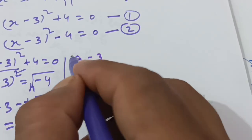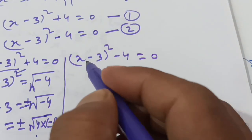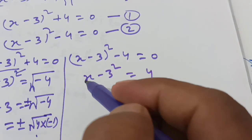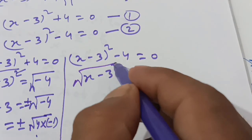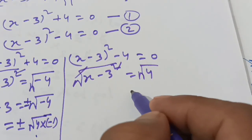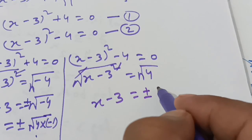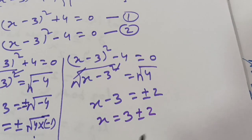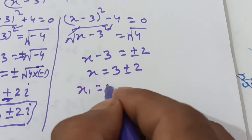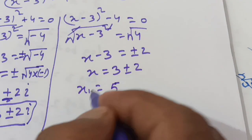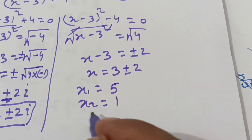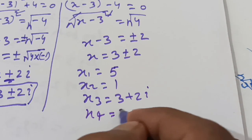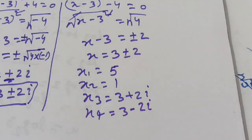For equation 2: (x minus 3) squared minus 4 equals 0, giving (x minus 3) squared equals 4. Taking the square root of both sides, x minus 3 equals plus or minus 2. So the four solutions are: x₁ equals 5, x₂ equals 1, x₃ equals 3 plus 2i, and x₄ equals 3 minus 2i.